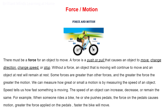We can measure how great or small a motion is by measuring the speed of an object. Speed tells us how fast something is moving. The speed of an object can increase, decrease, or remain the same.